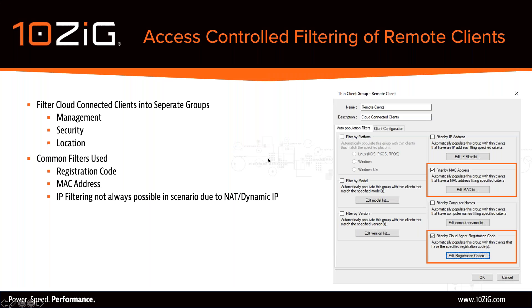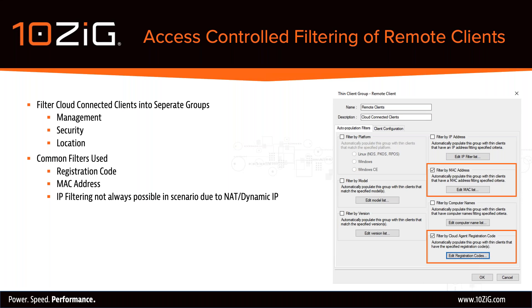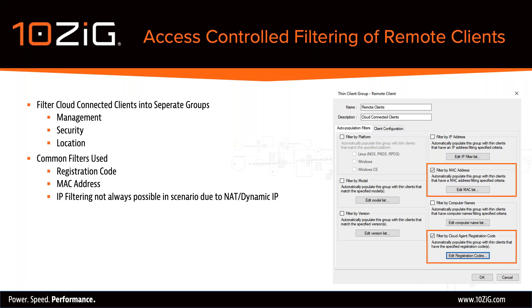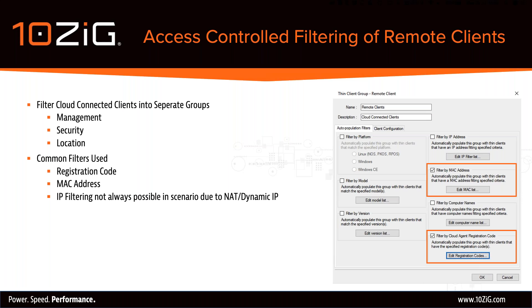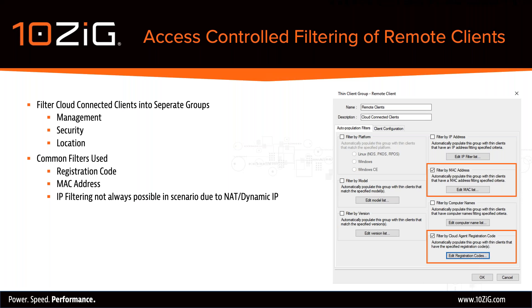The next part focuses on how we can filter remotely connected clients into separate groups. From a management perspective, we may want to assign different management templates and settings to different types of users. From a security perspective, we want to ensure configuration is applied only to specific clients matching our access-controlled filters. Based on location, clients connecting from specific geographical locations may be filtered under a group administered by a local team, with settings specific to their location such as time, date, and language. The two examples we'll cover are MAC and Cloud Agent registration code filtering.